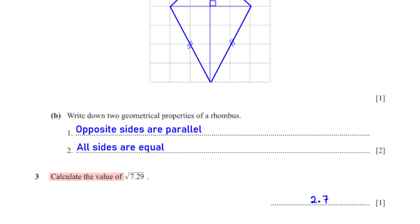For example, calculate the square root of 7.29. When we type this into the calculator, we get 2.7.